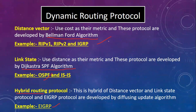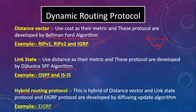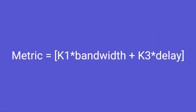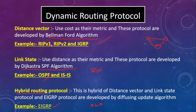The distance vector algorithm uses hop count — if there are 3 devices connected, the hop count is 3. The hop count determines the path for data. Link state protocol uses bandwidth — how much bandwidth a link has and how efficiently we can reach a router. EIGRP uses hop count plus bandwidth, meaning delay plus bandwidth, to determine the best path to a destination.